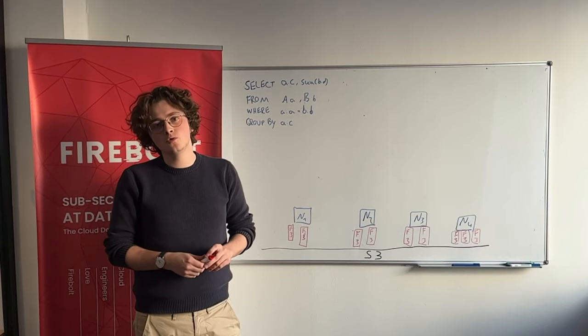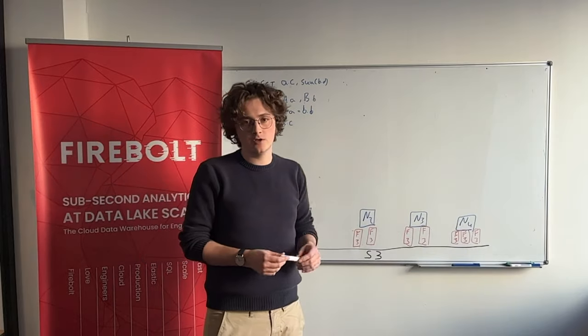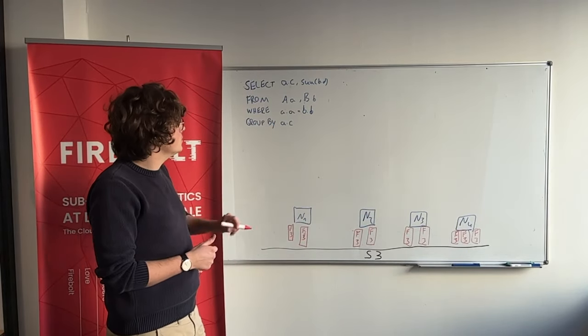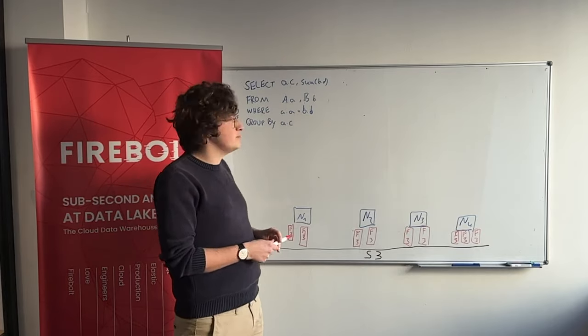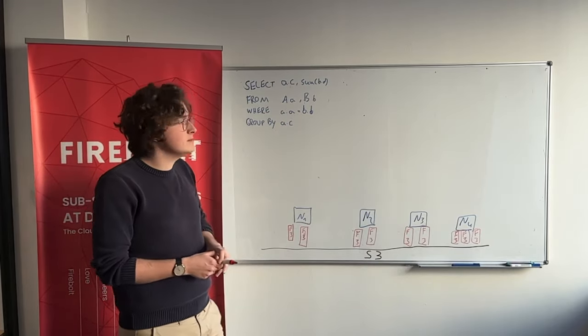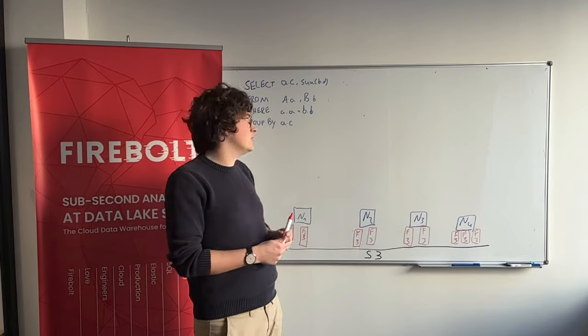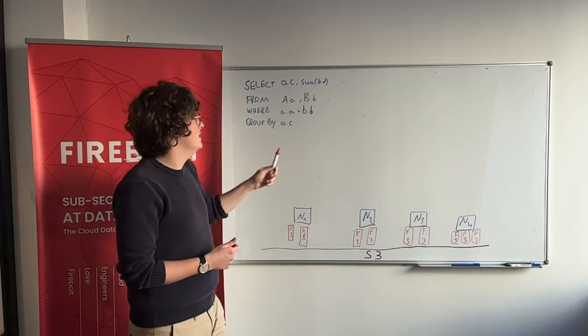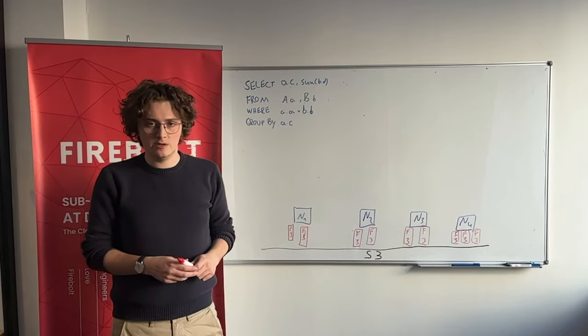So let me take you through how a distributed query actually works in Firebolt. I've prepared this example query. What we're doing is we're scanning two tables A and B, doing an equality join on A.A equals B.B, aggregating by A.C, and finally projecting that aggregated A.C column as well as a sum over one of the columns in B.